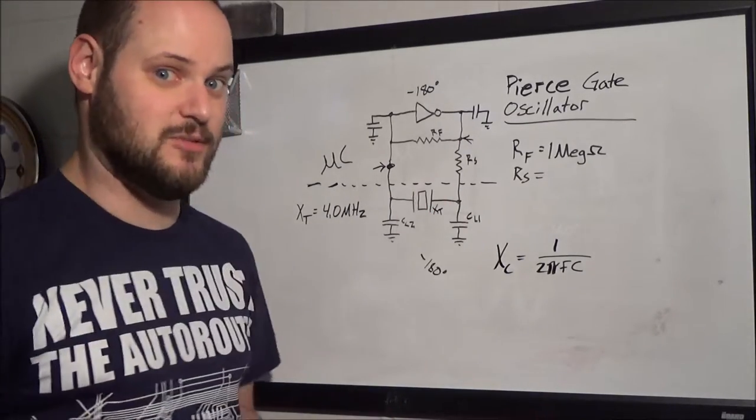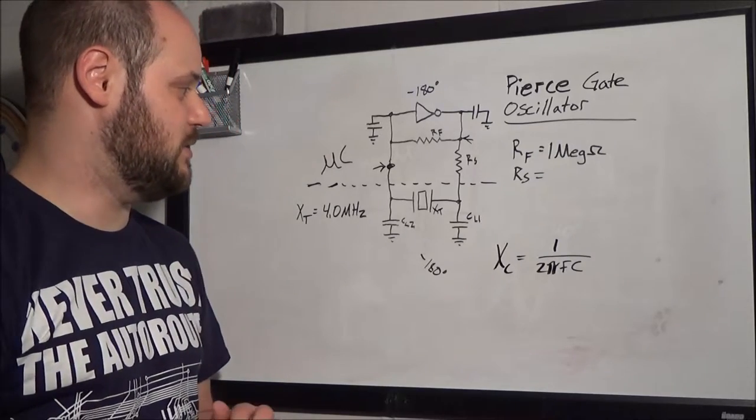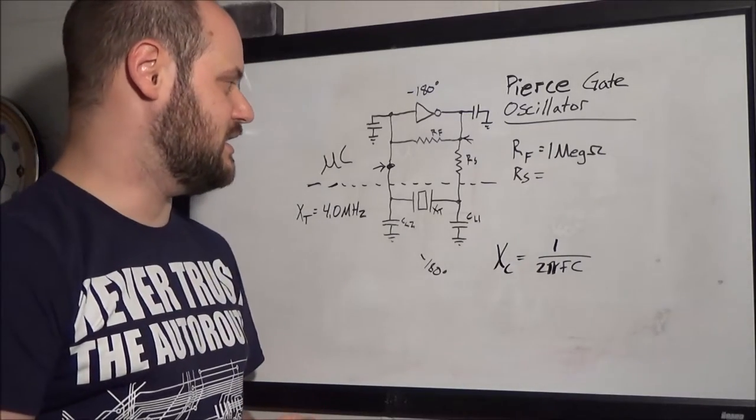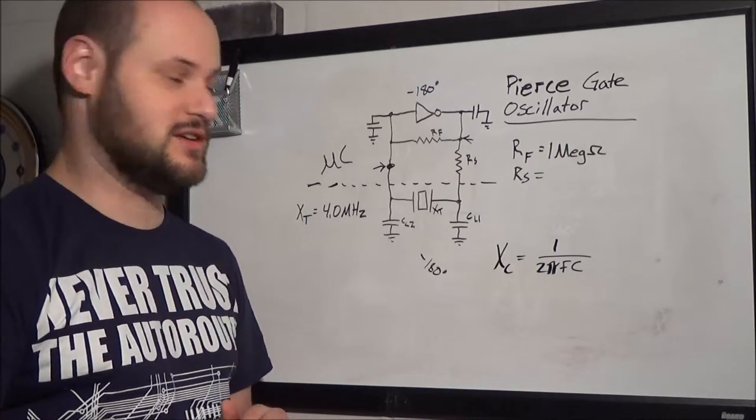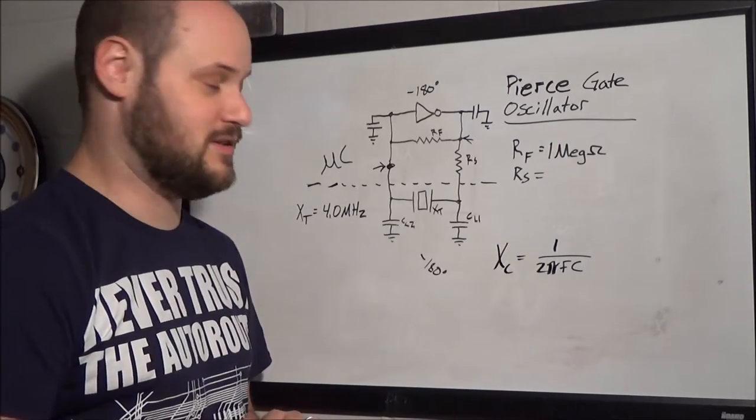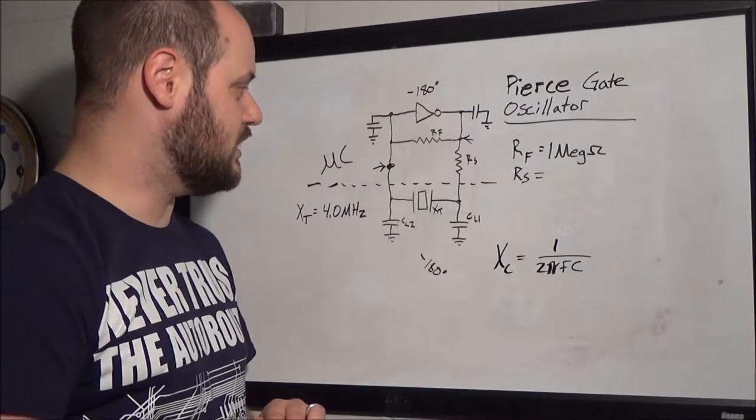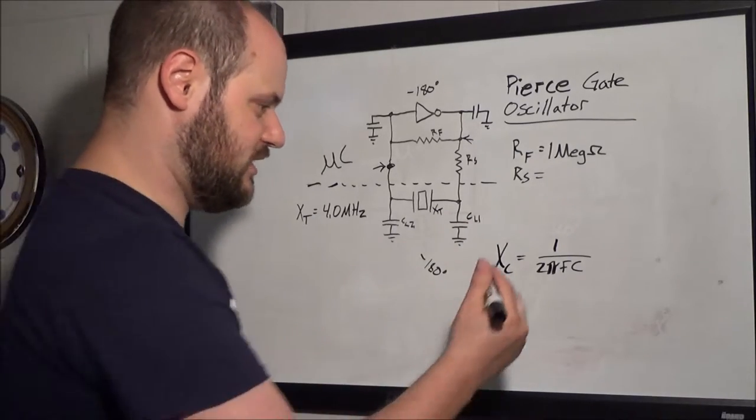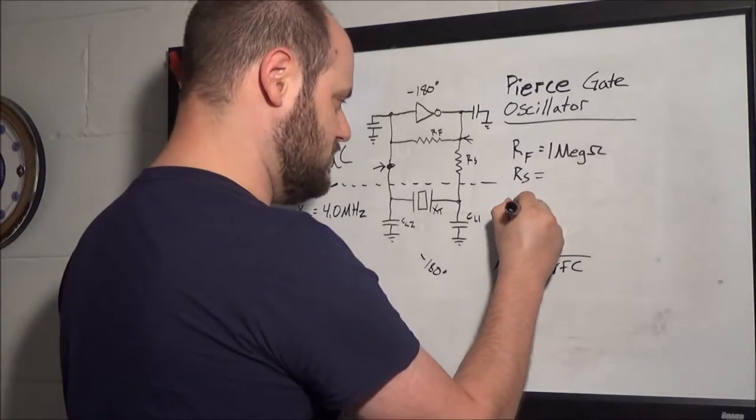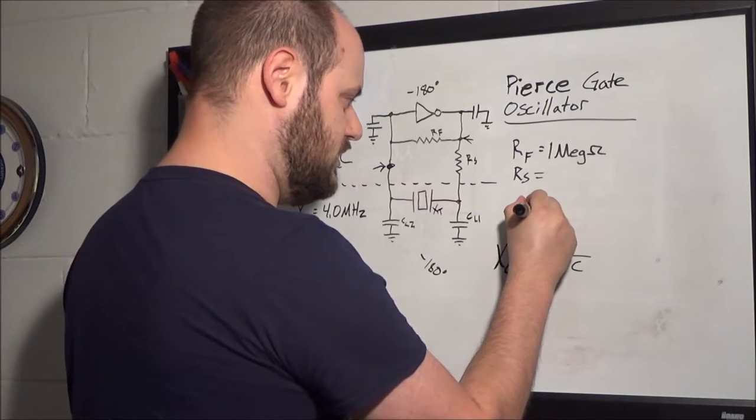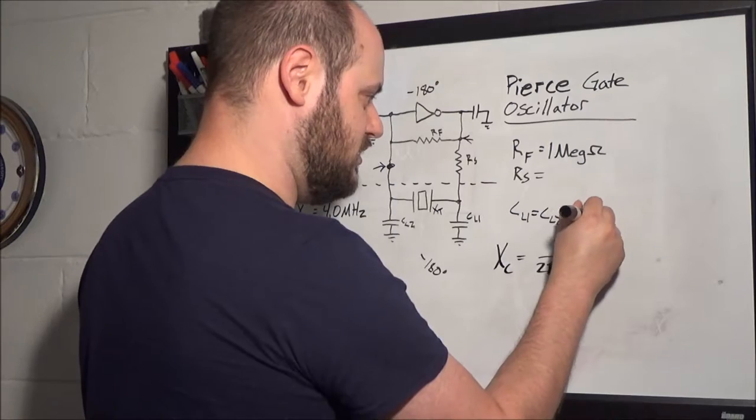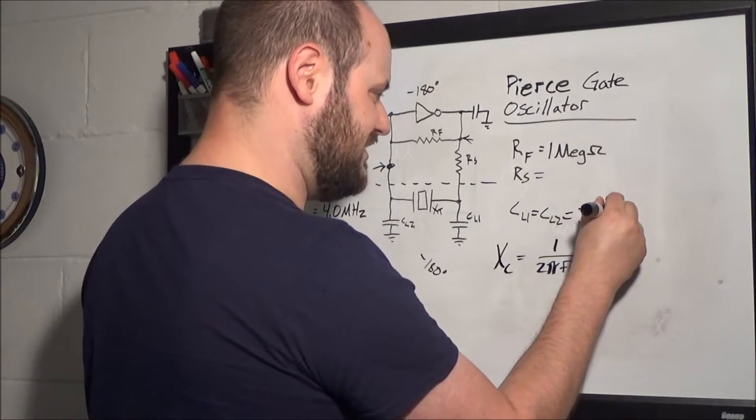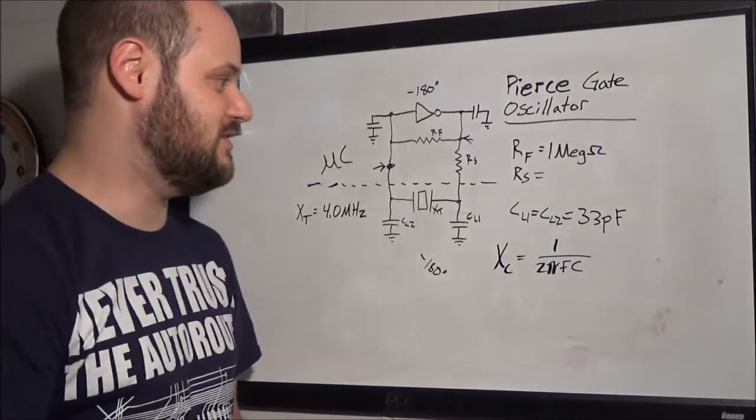You know, again, with just an estimate of what the PCB parasitic will be, we don't know yet. But of course, once it's built, we can actually measure that parasitic and come back and verify that assumption. So anyway, I'm gonna make CL1 and CL2, CL1 equals CL2 equals 33 pico-farads because that's the next standard value up from 30 pico-farads.